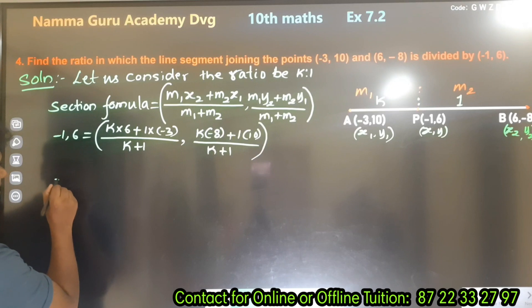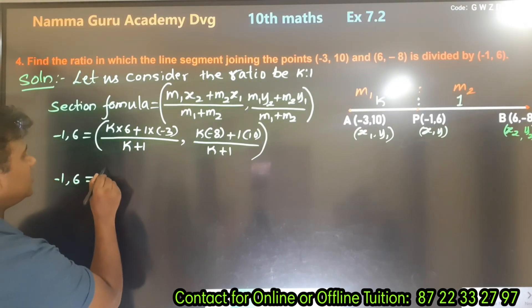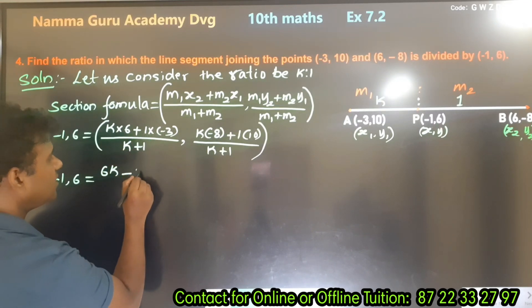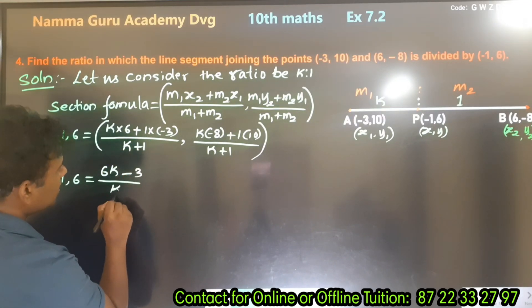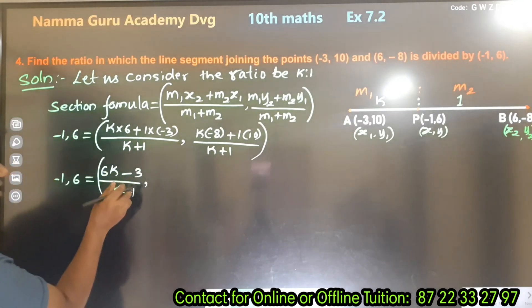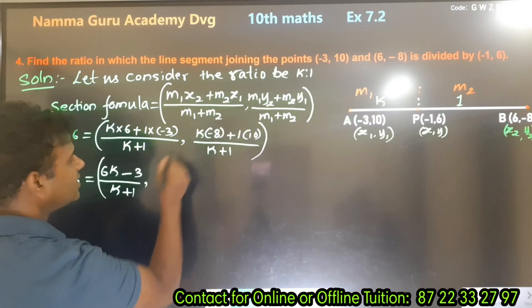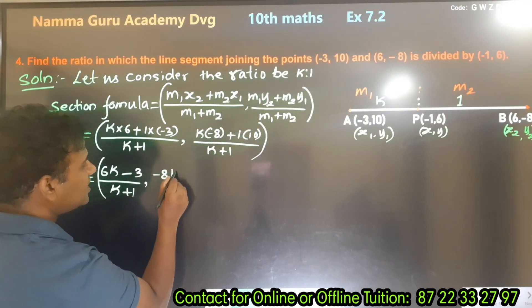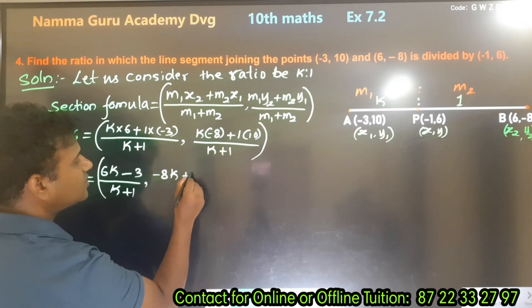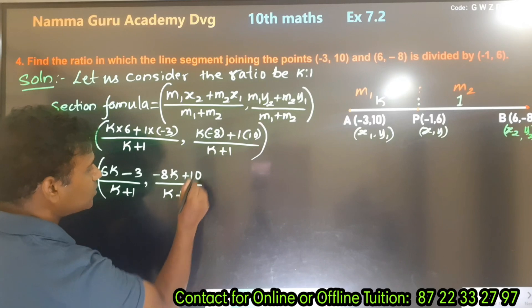Here we have (-1, 6) equals (6k + (-3)) divided by (k + 1), and (-8k + 10) divided by (k + 1).